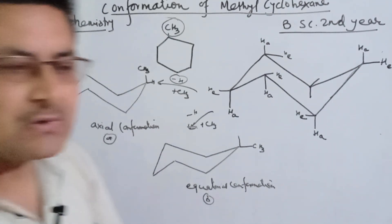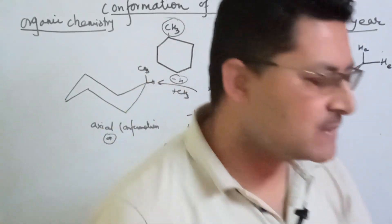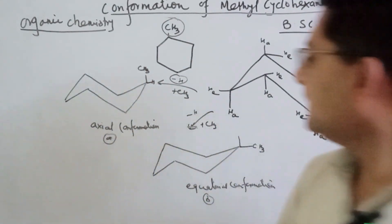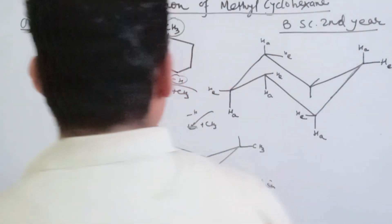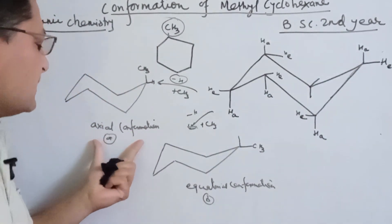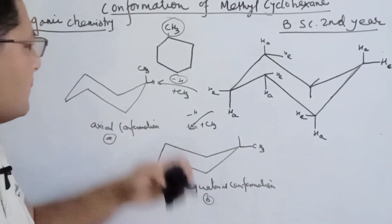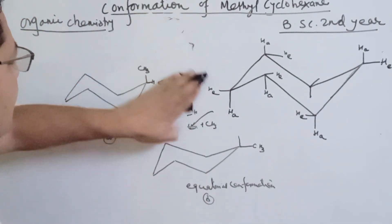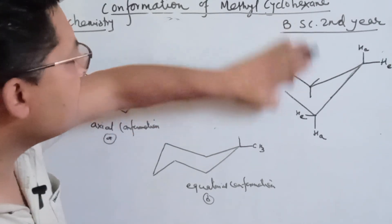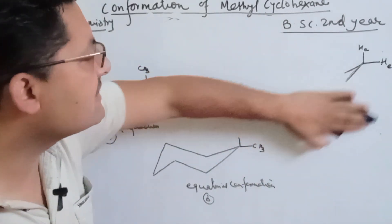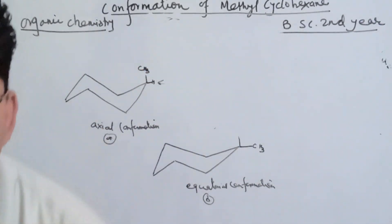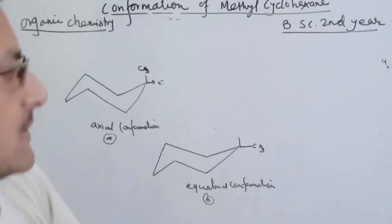If you have two chair conformations of cyclohexane — we have the axial conformation and the equatorial conformation — this is methylcyclohexane. The methylcyclohexane in equatorial position is the most stable form.